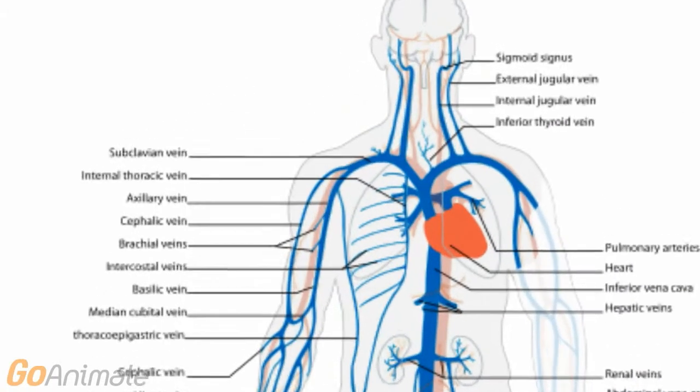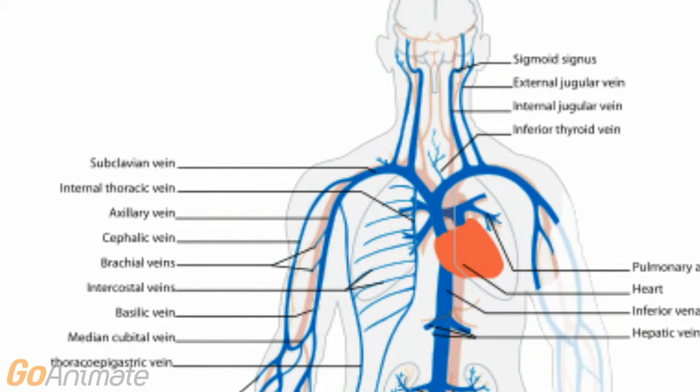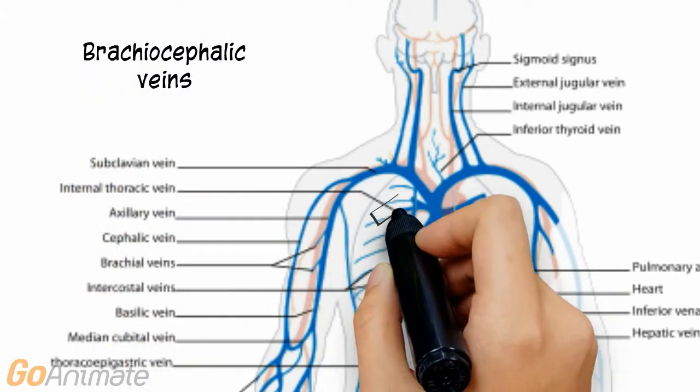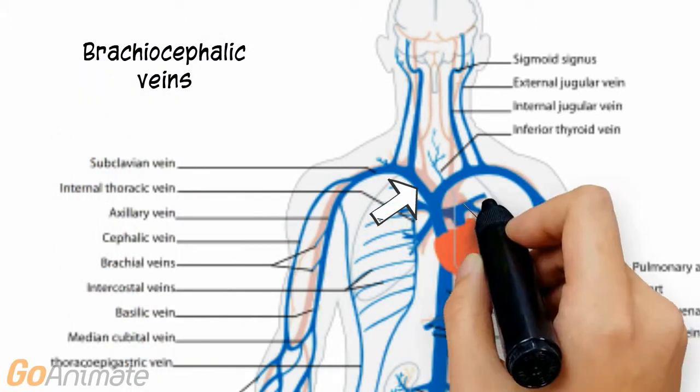The veins have a similar arrangement. One difference is that there are both superficial and deep veins. A lot of the deep veins have the same names as the arteries. We will examine just a few veins.